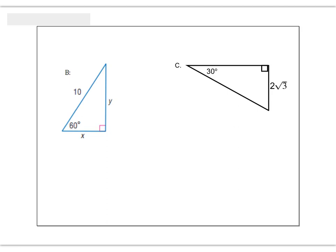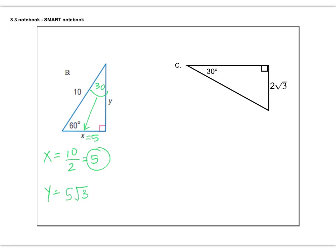Let's try a couple more. On part B, you can see we have the hypotenuse. The hypotenuse is always double the short leg. Our 30-degree angle is up here, and the short leg is across from that. So to get X, we just take the hypotenuse and divide it by 2 to work backwards. X ends up being 5 — that is both the approximate and the exact answer. Now once we know X is 5, to get Y we take that short leg and multiply by root 3. 5 root 3 would be the exact answer, and approximately 8.66 for Y.